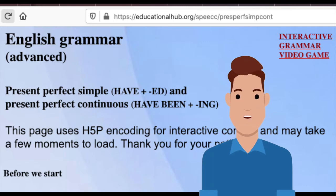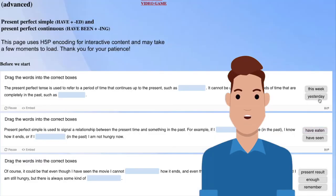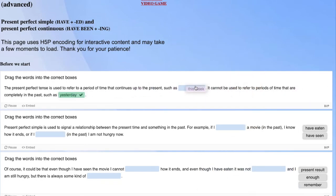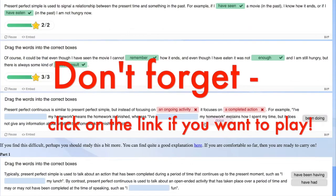Intrepid adventurers who click on the Advanced button will get taken to a page that gives further information about the present perfect simple and the present perfect continuous. The page combines a fairly advanced explanation with a drag-and-drop interface.